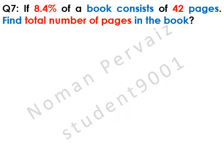Question number 7 is, if 8.4% of a book consists of 42 pages, find total number of pages in the book.